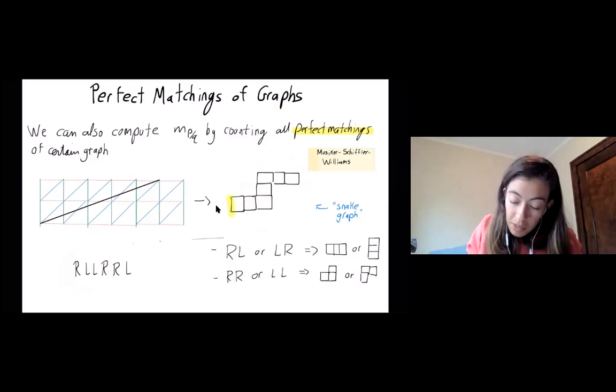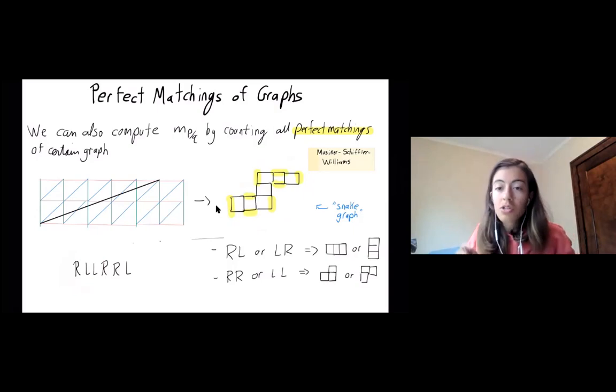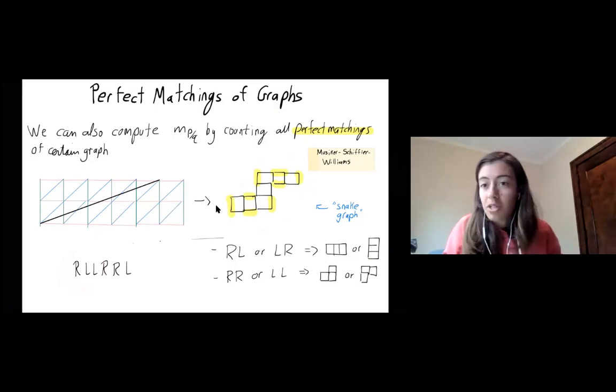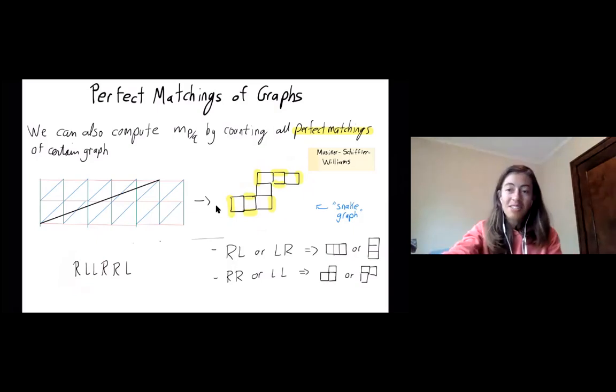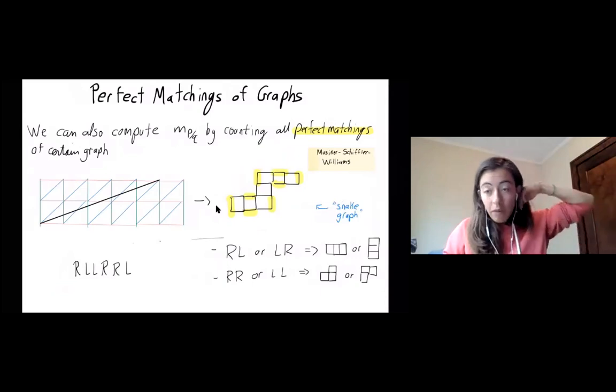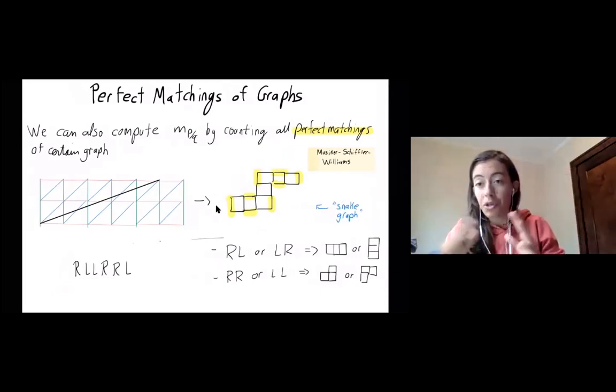So here's an example. It's a perfect matching is a subset of the edges, so that every vertex is touched exactly once. So what I highlighted is a perfect matching. And it turns out this has 29 perfect matchings. I'll admit counting, the continued fractions is faster, but maybe this is prettier. Okay, so this is all I wanted to say about, so this is all known stuff about the standard Markov numbers and their connection to cluster algebras.